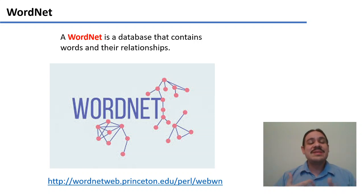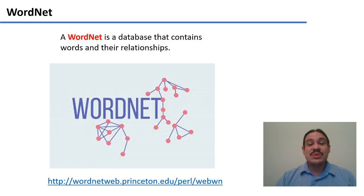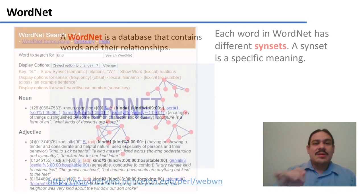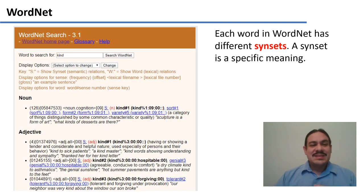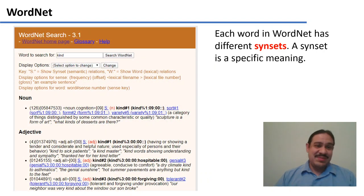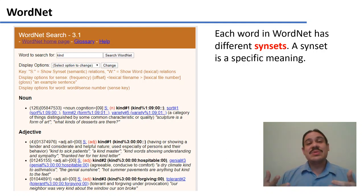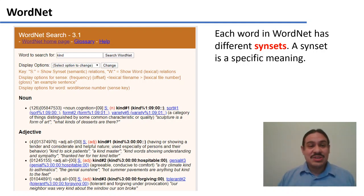There is a hand-curated database called WordNet, which is really helpful with this — I'll leave the URL there. WordNet has been built over a long time, and it's been very difficult to build. These kinds of networks exist for many languages; we're going to look at the example for English here.